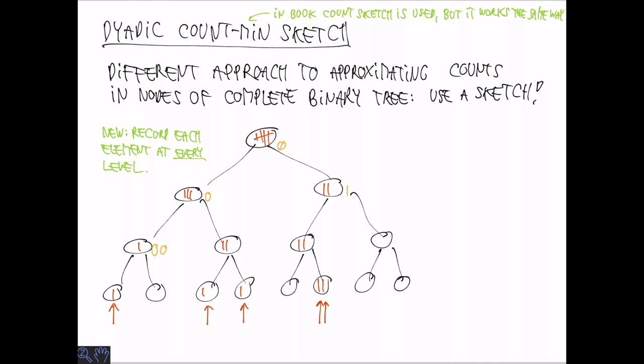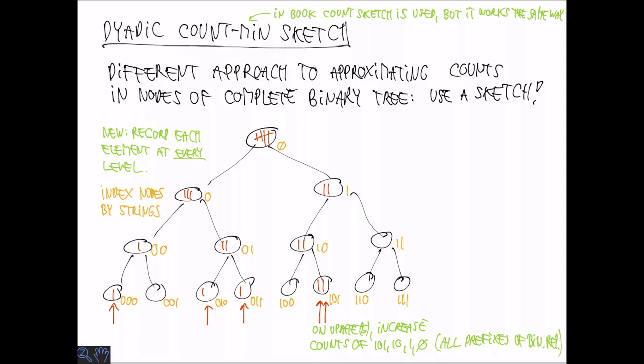So this would be a problem if we stored it exactly. But what we can do instead, if we index the nodes in some way, for example using binary strings, is that we can store the counts in a sketch. On an update we want to increase the counts of all the nodes on the path to the root from the leaf corresponding to the inserted elements. This corresponds to all prefixes of the binary representation of the element.